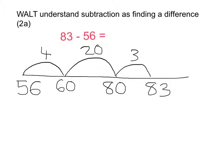I now need to work out how many it took to get me to 83. That's 4, 20, and 3. So the answer is 27.